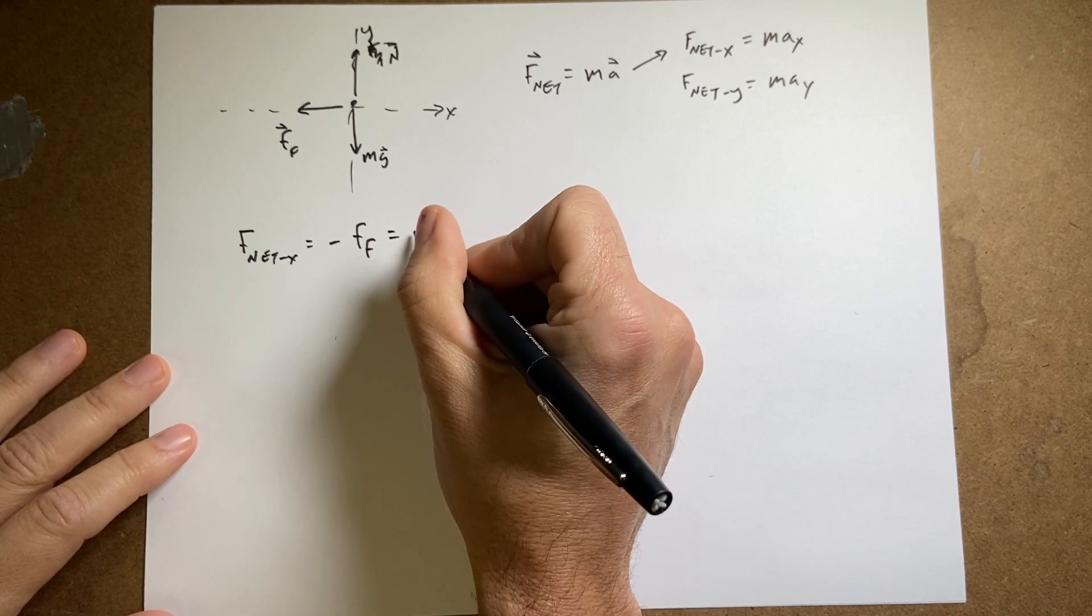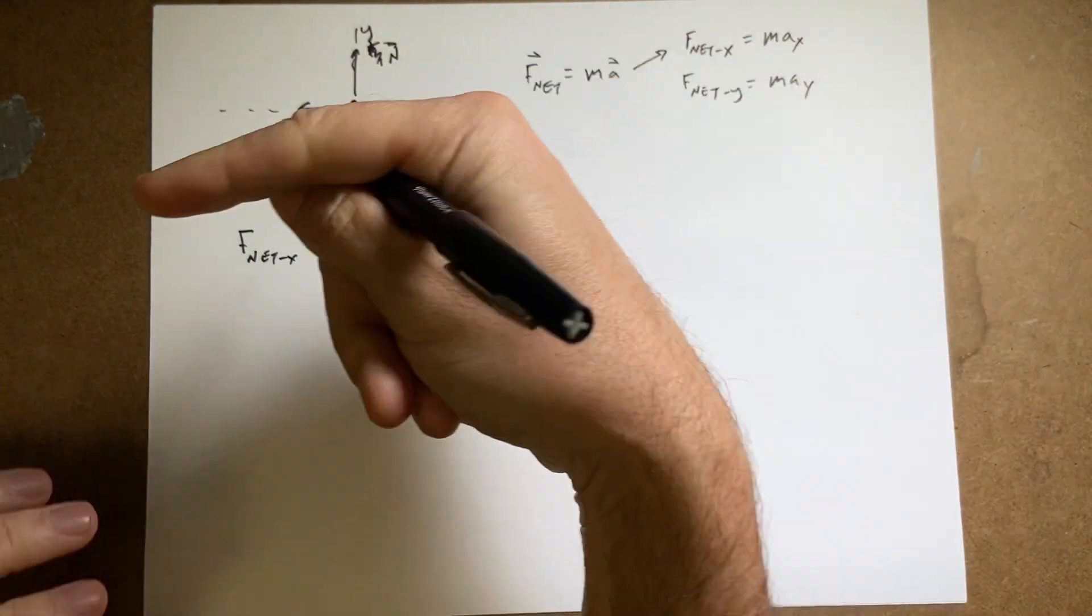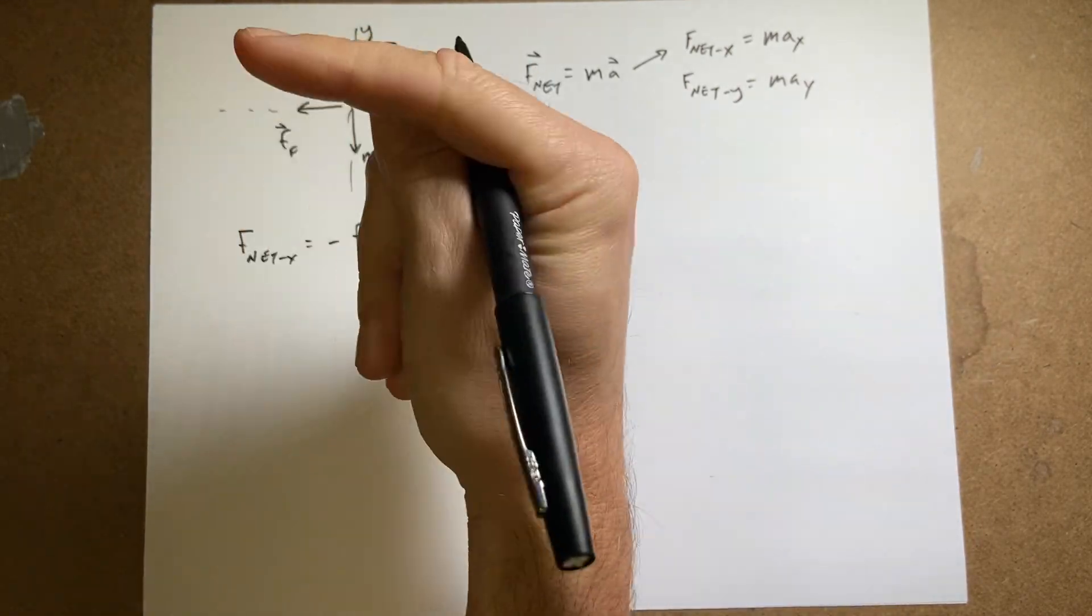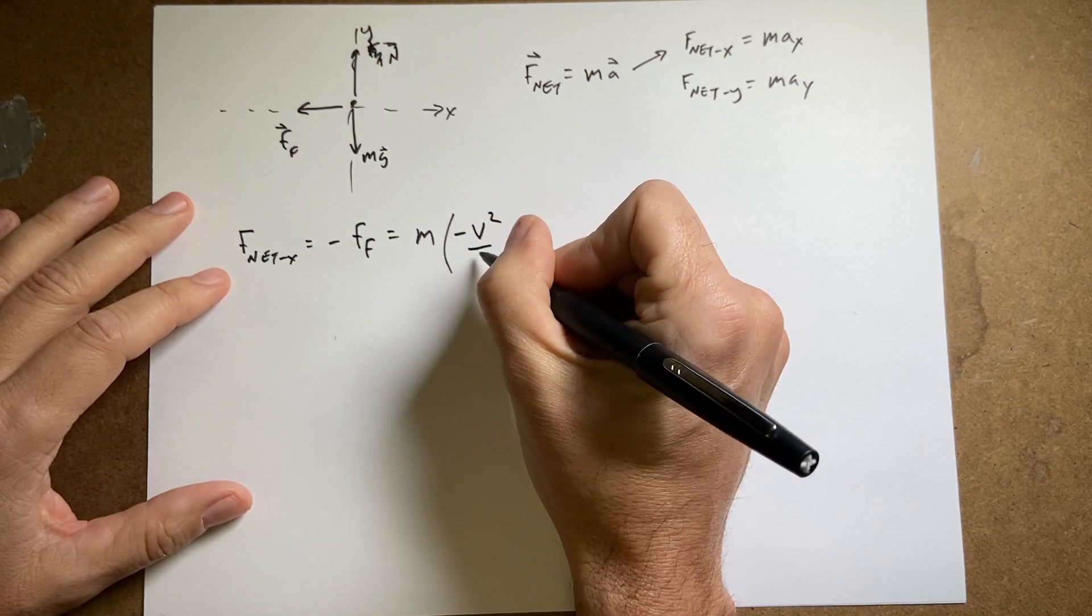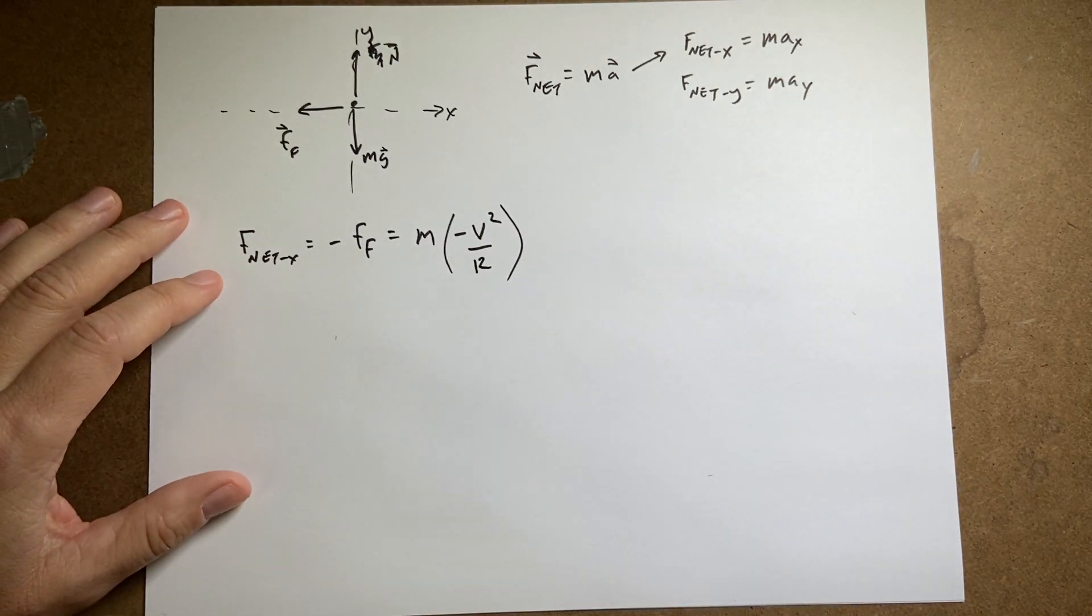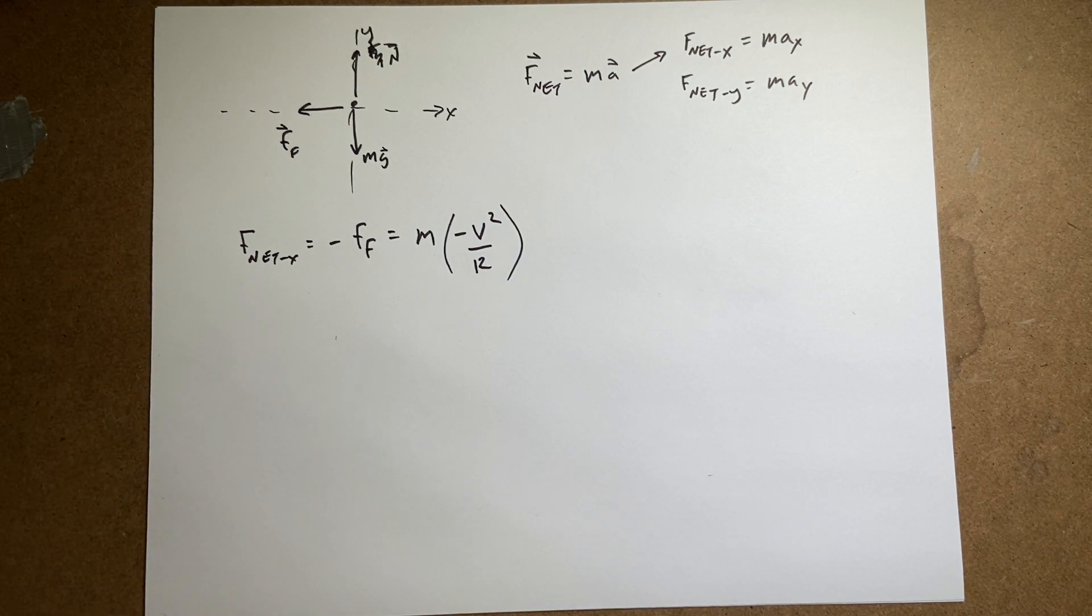And that's going to be equal to the mass of the penny times the acceleration, which is also in the negative x direction, because that's the direction of the center of the circle. So I'll write this as negative v squared over r, because that's the acceleration of an object moving in a circle. We call that centripetal acceleration.